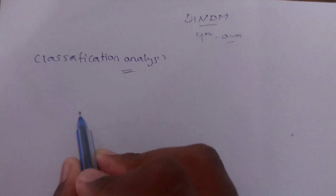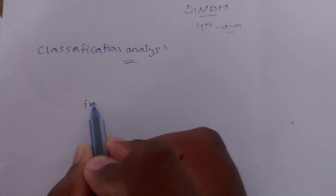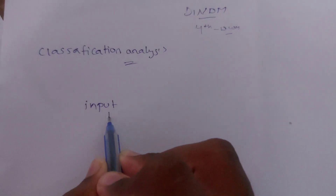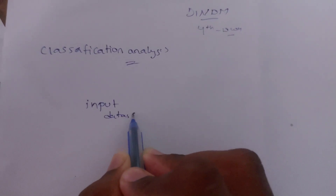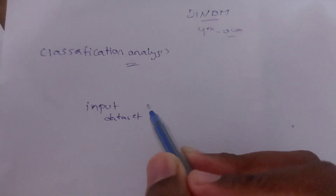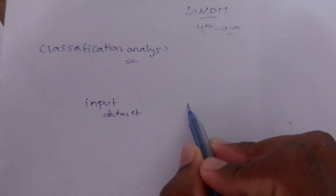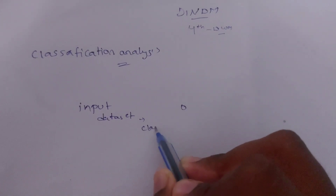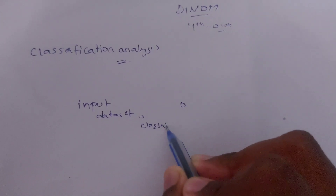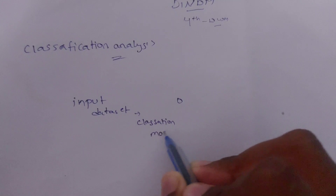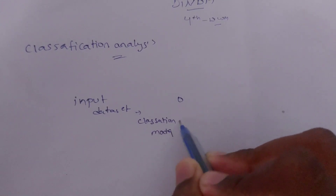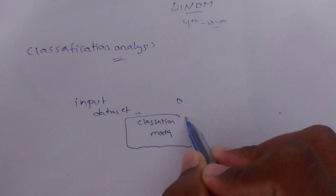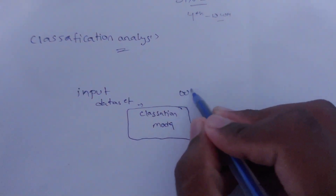First, we have input data type — the input data set. Next, we can classify using the classification model. And next, we have output.